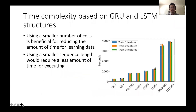This is the time complexity analysis based on GRU and LSTM structures. We can see that a smaller number of cells is beneficial for reducing the amount of time for learning. Also, smaller sequence lengths require less time for execution, which is what we expected.